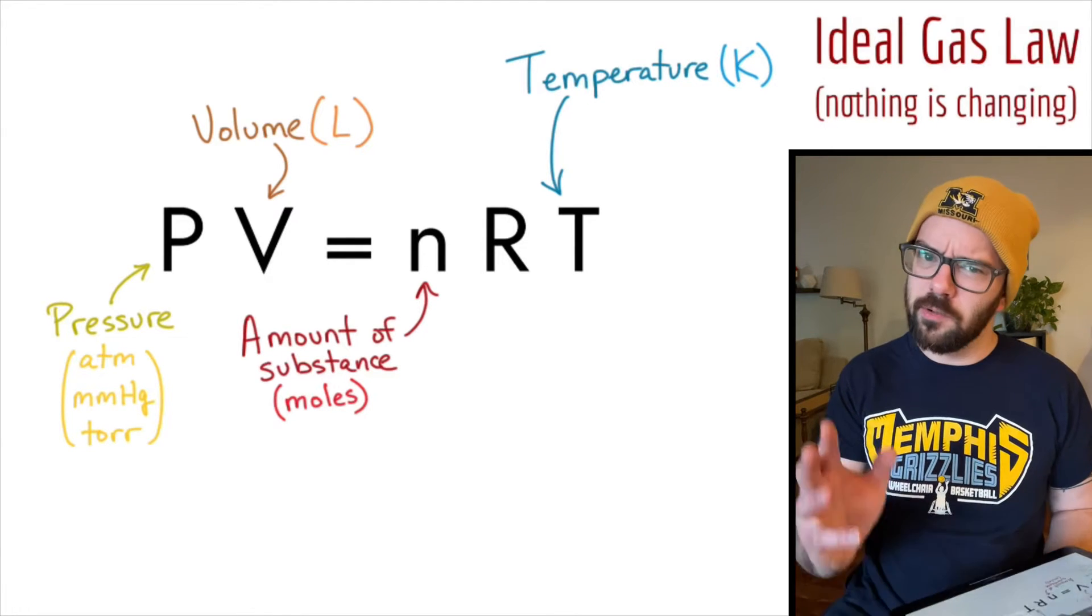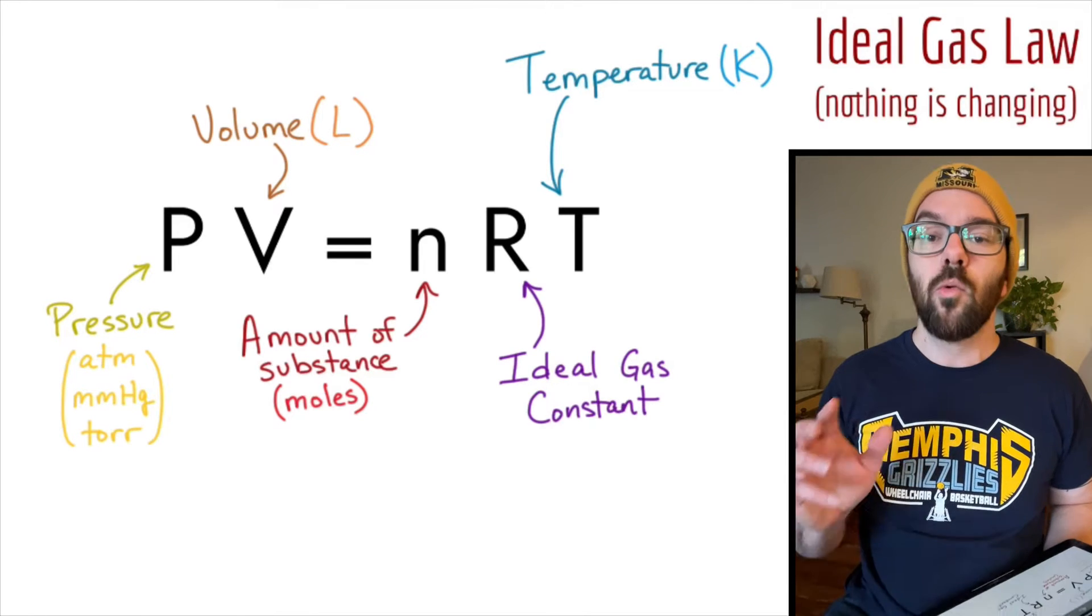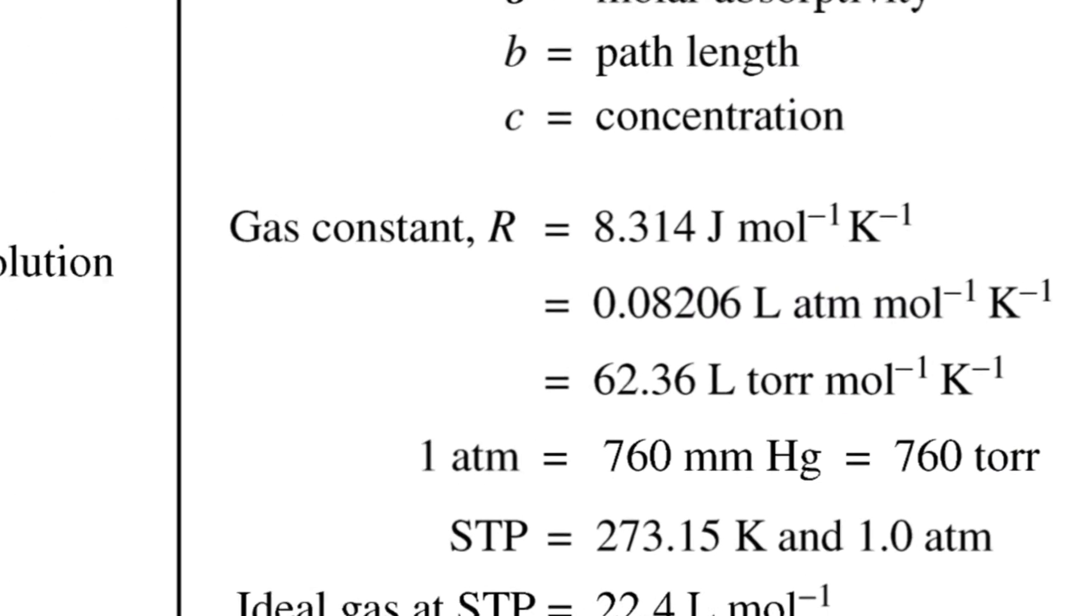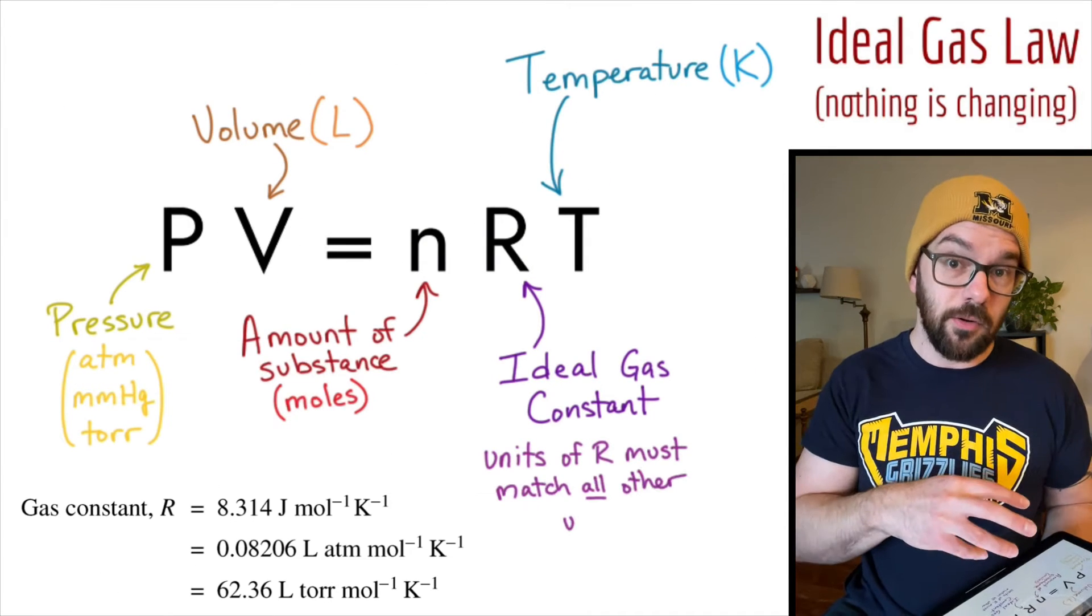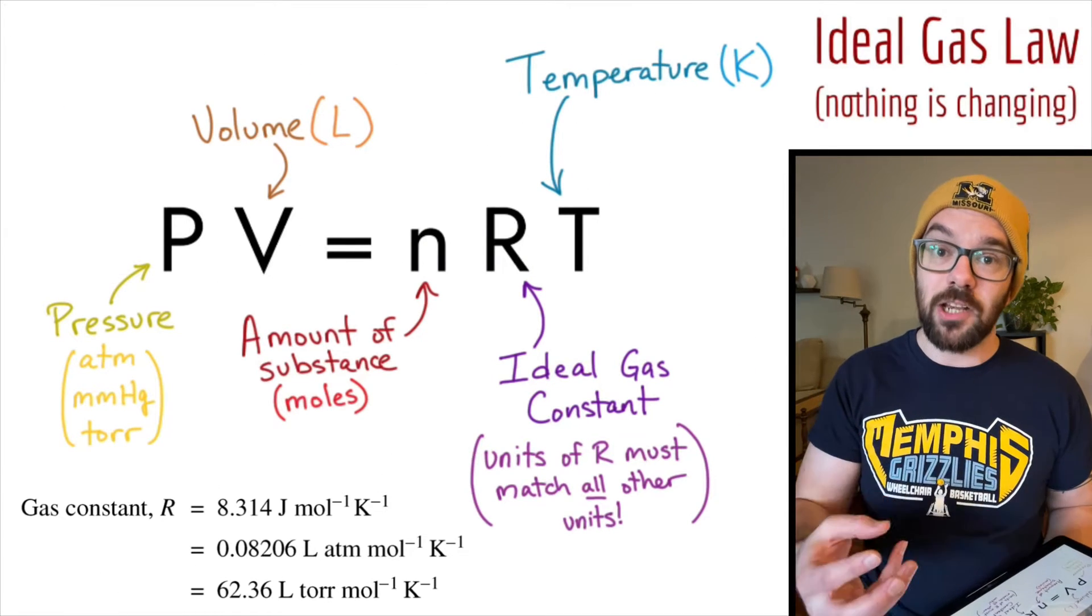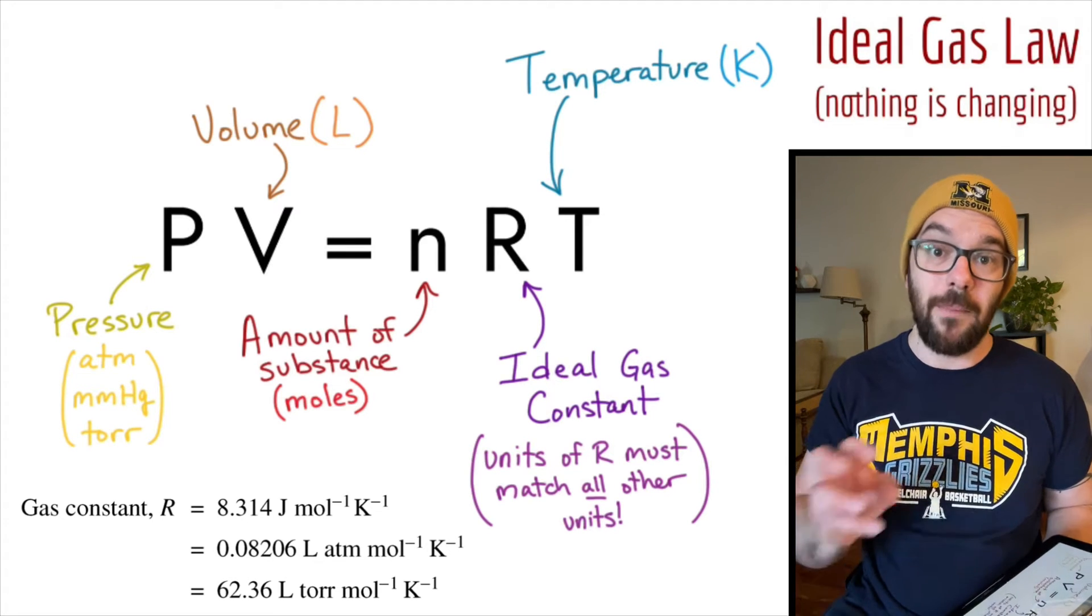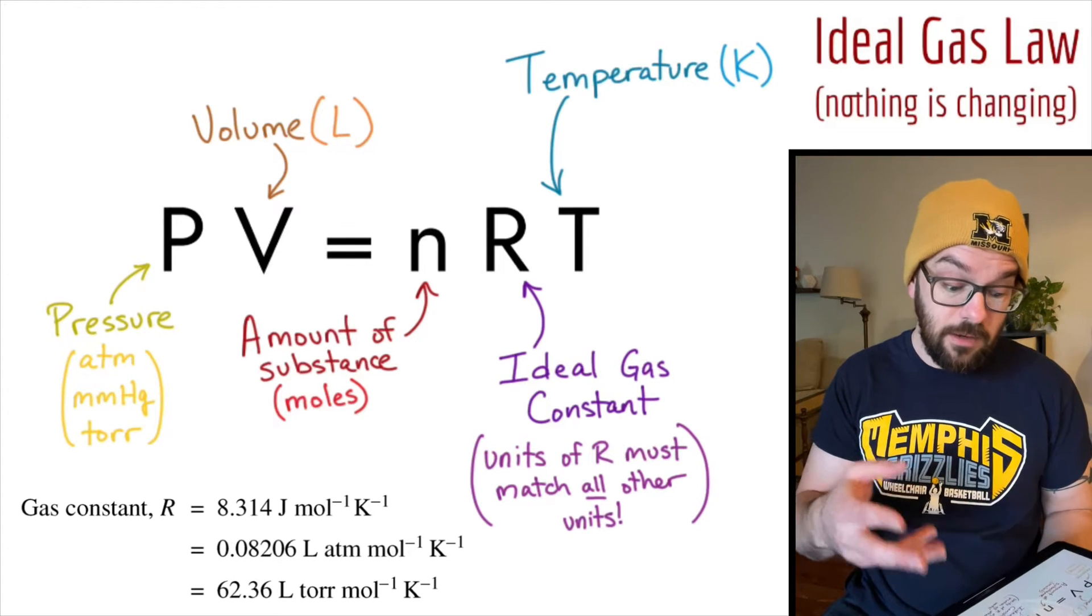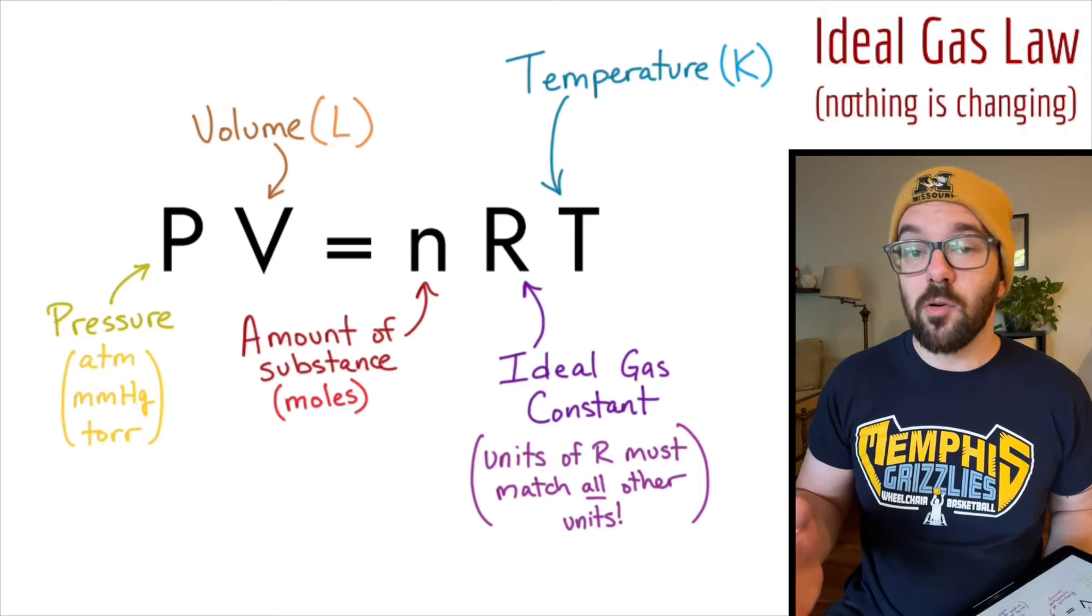All right, the last variable here is really not a variable. It's a constant, and that's the ideal gas constant, R. When you look this up, there's different values for it. The AP equations constant sheet has three different ones. The big thing we have to look at here, though, is what are the units that all of our other variables are in? We've got to make sure those match the units of R. This is really important. We've got to use the right R that matches the units, or we have to convert the units in all these other variables like P, V, n, and T in order to match the units of R.